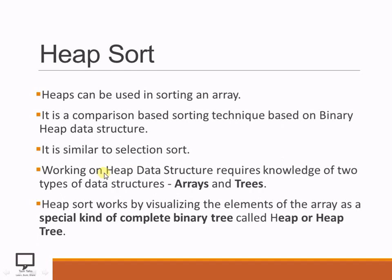Now we will see the working on Hip data structures. Whenever we want to perform an operation like sorting with the help of HipSort, the Hip data structure needs to be implemented. For that implementation we need to take help of arrays and trees — these are two basic data structures. With the help of these two data structures we can construct the Hip data structure, which can be used for sorting. Now whenever we want to perform sorting with the help of Hip data structure, we must know the concept of arrays as well as trees.